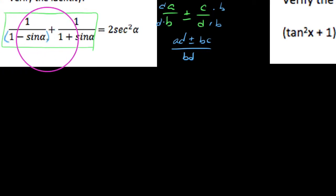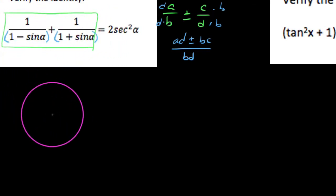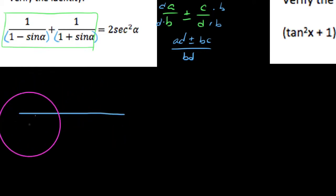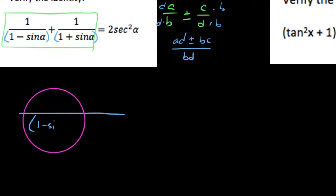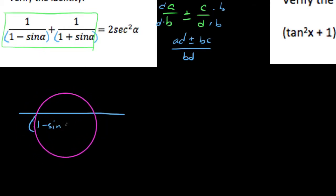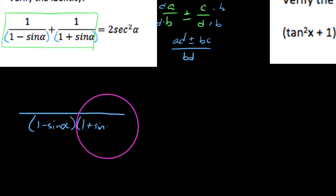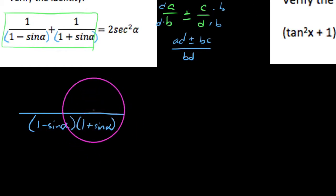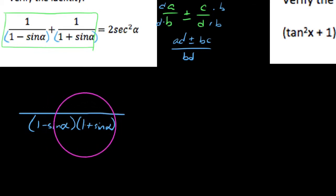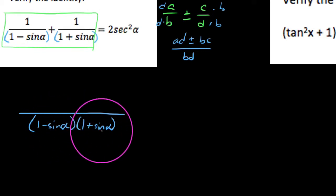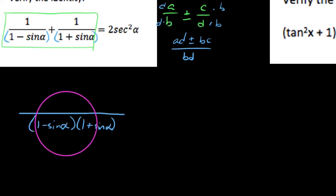We've got two fractions, and these fractions happen to be complex-like expressions. Our common denominator on the left side is going to be the product of these two denominators, so we get 1 minus sine of alpha times 1 plus sine of alpha, and then we'll talk about what you get in the numerator. I want everybody to notice that what we're multiplying together are two conjugate pairs — and remember when you multiply conjugate pairs you get a difference of two squares.